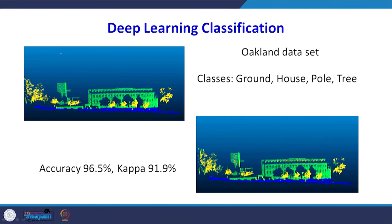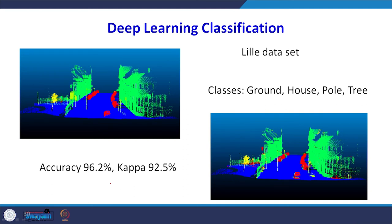Deep learning techniques and artificial intelligence and machine learning are also finding their way into geomatics engineering. A deep learning classification approach can be used to identify ground, house, poles, and trees from the collected data, achieving very good accuracy of up to 96.5 percent. This is another example of how such techniques can be applied to achieve high accuracy in 3D model creation and measurements.